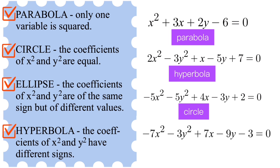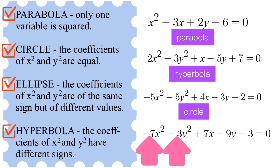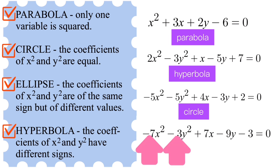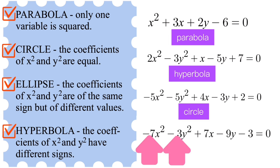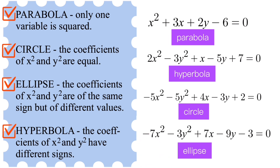In this fourth example we can see that the signs of the squared variables — x² and y² — are both negative. We have negative 7 and negative 3. Since these two numbers are not the same, this fourth example is an ellipse because the coefficients of x² and y² are of the same sign but of different values.